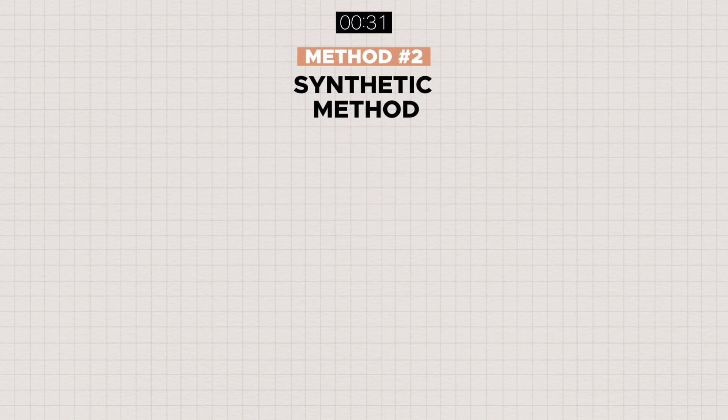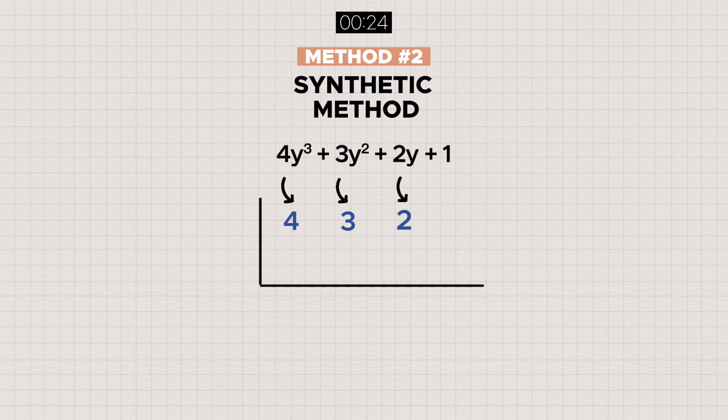For synthetic method, start off with arranging the dividend's terms in decreasing degree. Then, draw an L-shaped frame and list down the coefficient and constant for each term in sequence. Equate the divisor to zero and solve for the unknown's value and have it written on the left.